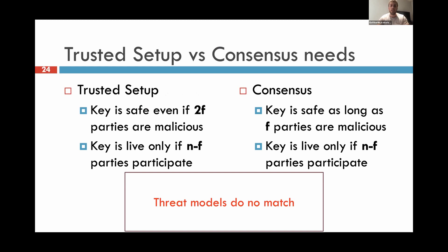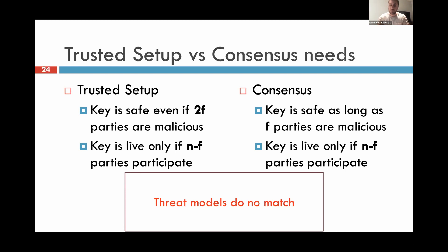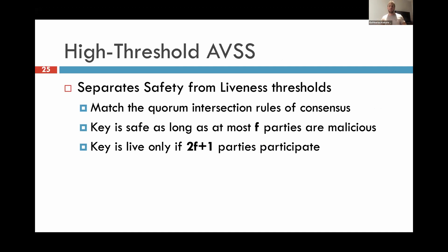To solve the first problem, we looked at what the trusted setup actually gives us versus what consensus actually needs. If you look at this slide, there is a difference. Both protocols need n-minus-f parties to participate for liveness — that's what Hybrid DKG doesn't have and what we want. However, for safety, a trusted setup gives resilience against up to 2f malicious parties. But we know in consensus that once you get f+1 malicious parties, the protocol is broken for completely different reasons. So there is no point in protecting the key for more than f parties — the threat models do not match. This inspired the high-threshold asynchronous verifiable secret sharing, HAVSS, that we introduced.